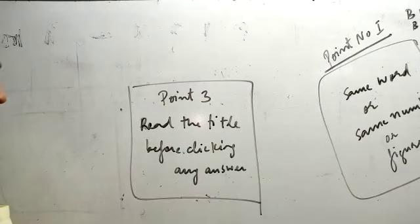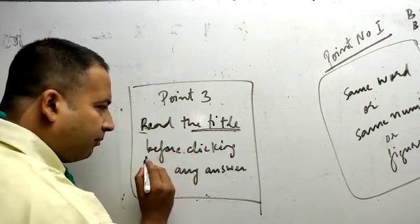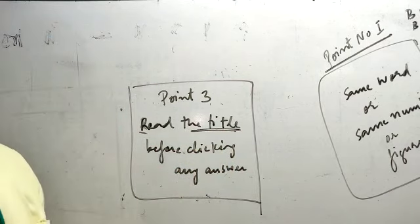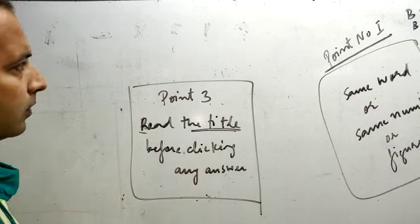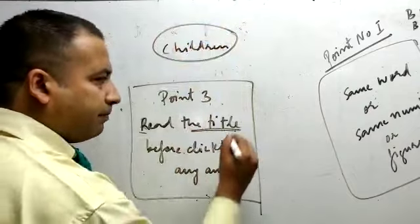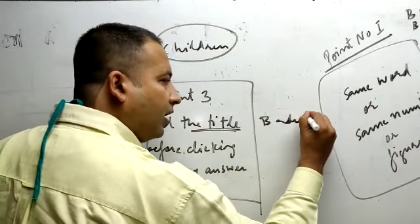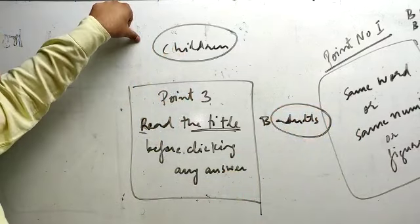Last point to be noted when solving MCQs is that read the title before clicking any answer. It's very important to read the title. Why is it important to read the title? Suppose the title is about children. The whole paragraph is about children but an option is talking about adults. They used the word adults.